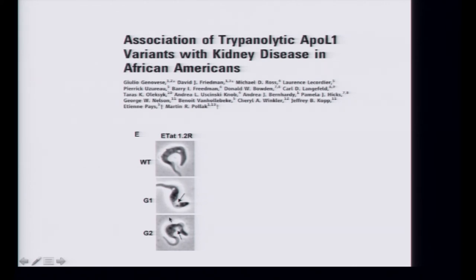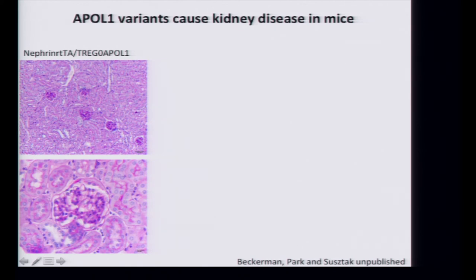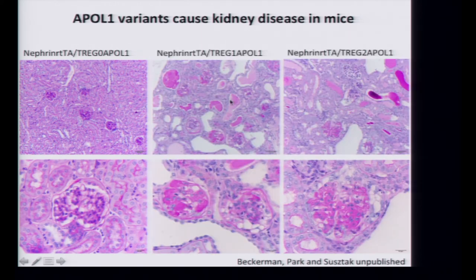But if you have two copies of this variant, you get kidney disease. The odds ratios for kidney diseases range from 2 to 100-fold. If you get HIV on top of having this variant, it's almost certain you'll develop disease with these two alleles. My lab contributed to this by making a mouse model for the variant — if you put these variants into a specific cell type in the kidney, the glomerular epithelial cells, you get disease development. This indicates that this coding region variant is indeed disease-causing. That's one way of finding rare variants with large effect size — by studying a different population.